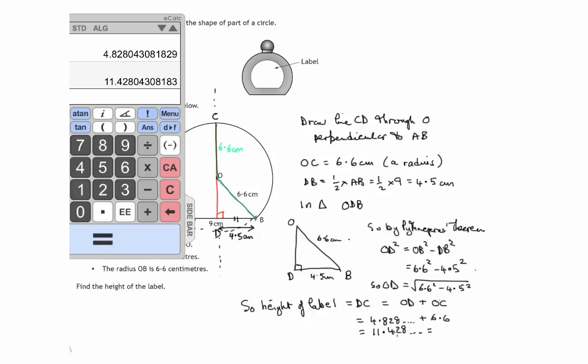So the height of the label. Let's do it to one decimal place because all these measurements, the radius measurement is to one decimal place. That would be consistent. So it's approximately 11.4 centimetres and that's to one decimal place. So that's the required height of the label.